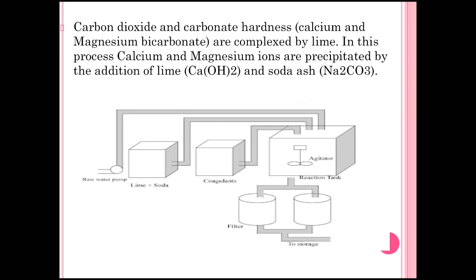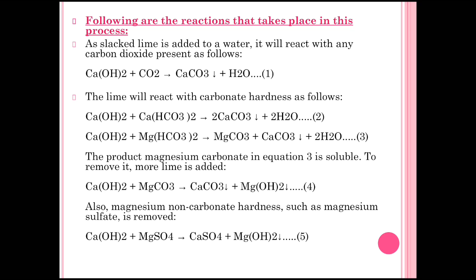Looking at the diagram of the soda lime process: there is first an inlet used to insert the raw water. From the left there is a box where lime plus soda is added, and another inlet for lime plus soda into the reaction tank. The third input is coagulants, used to coagulate all impurities. These chemicals are added in the reaction tank, then the water undergoes filtration so that carbonate and bicarbonate impurities are removed and water is converted into soft water.